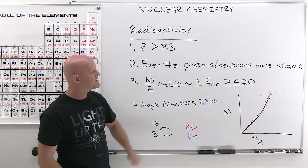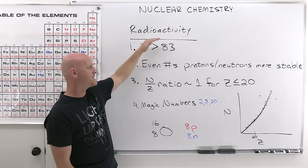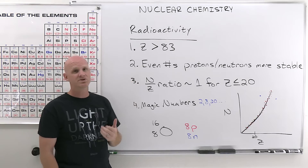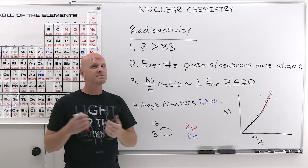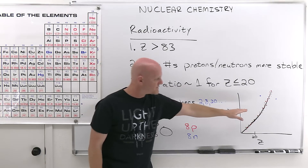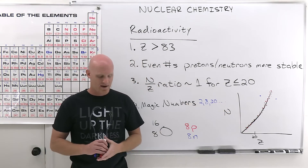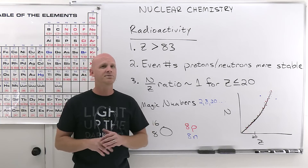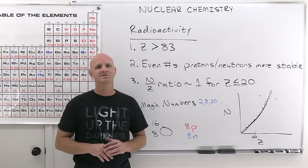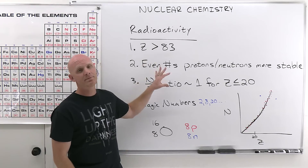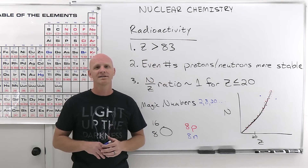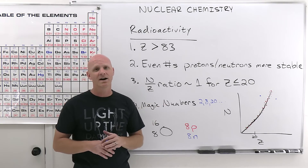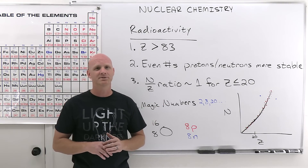Those are the trends in radioactivity. The top three — atomic number, even/odd protons and neutrons, and the N over Z ratio — are the most likely to be tested. Some professors emphasize the N over Z ratio significantly, others less so. If you found this lesson helpful, a like and a comment are the best ways to support the channel. For nuclear chemistry or general chemistry practice, check out my general chemistry master course with extra practice, videos, and study guides — link in the description. A free trial is available. Happy studying.